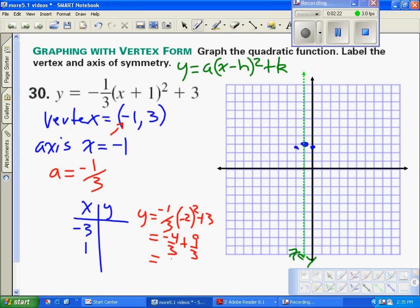Five-thirds is 1 and two-thirds. We're going to plot that point at negative 3, 1 and two-thirds, right here. This is a fairly wide parabola. Now we're going to do the same thing with 1.